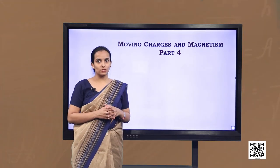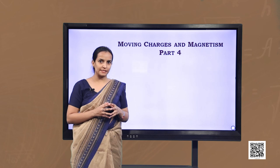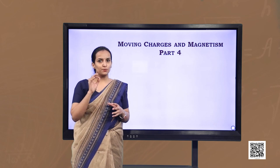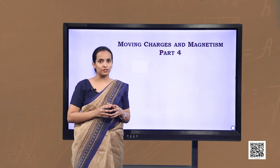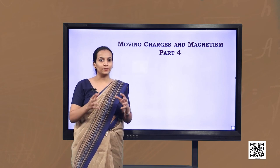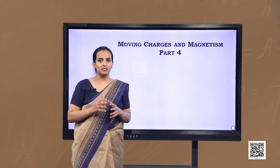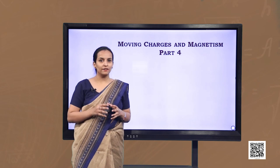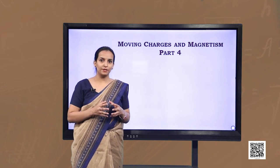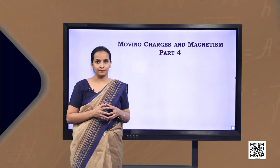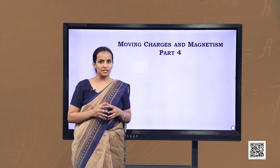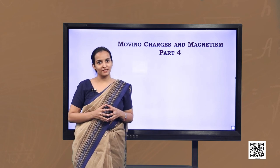So we have understood that a current carrying coil experiences a torque when placed in a magnetic field. This principle is used in the working of the galvanometer, which detects current in an electric circuit. We also discussed the magnetic moment of a revolving electron and how to convert a galvanometer into an ammeter and a voltmeter. Try to solve the example problems in your physics textbook related to these topics and share your solutions with your friends.